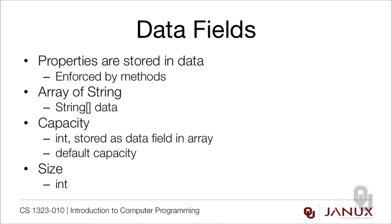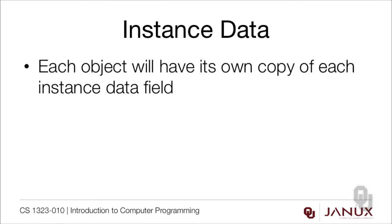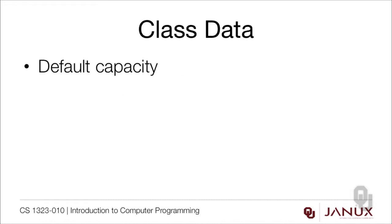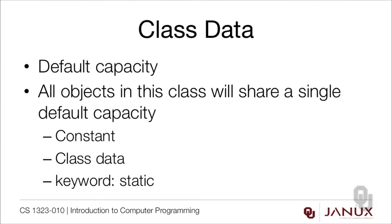We're not going to do the extensible part of ArrayList — that's more advanced programming you'll see next semester. For instance data, each object must have its own copy of each instance data field. So 'data' and its associated data.length definitely have to be instance data, because two different StringArrayLists would each need their own underlying array. Size also needs to be instance data because each ArrayList could have a different size at any given time. The default capacity, however, is class data — all objects in the class share a single default capacity. It should be a constant and class data, and the keyword for this is static.